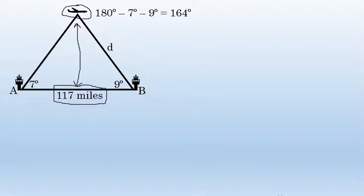In this case, 180 minus 7 minus 9 equals 164 degrees. Therefore, the angle below the airplane is 164 degrees.